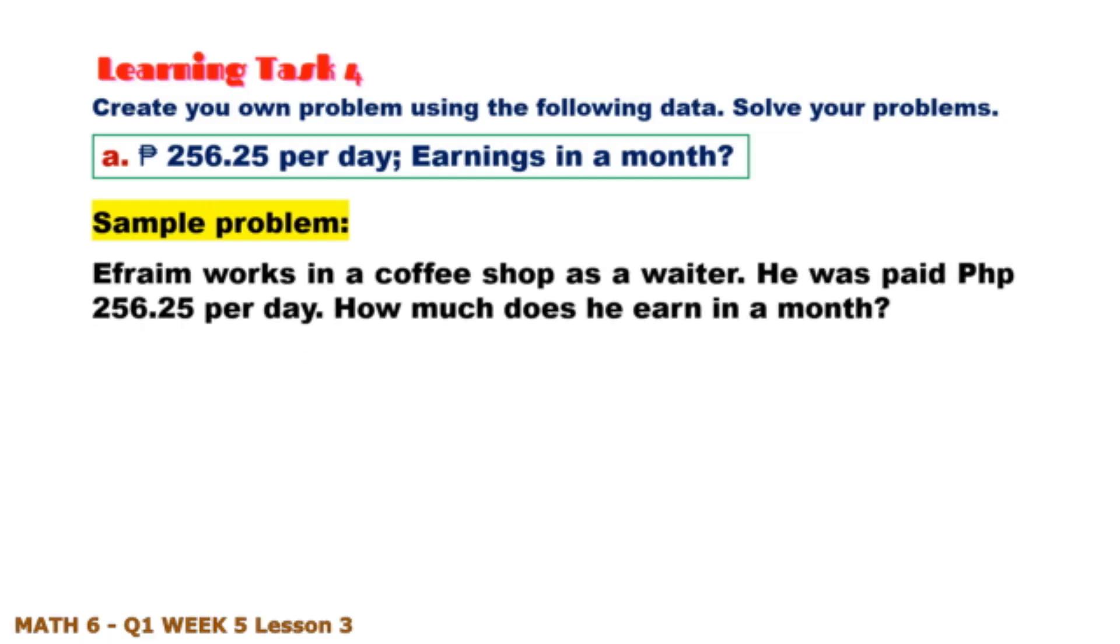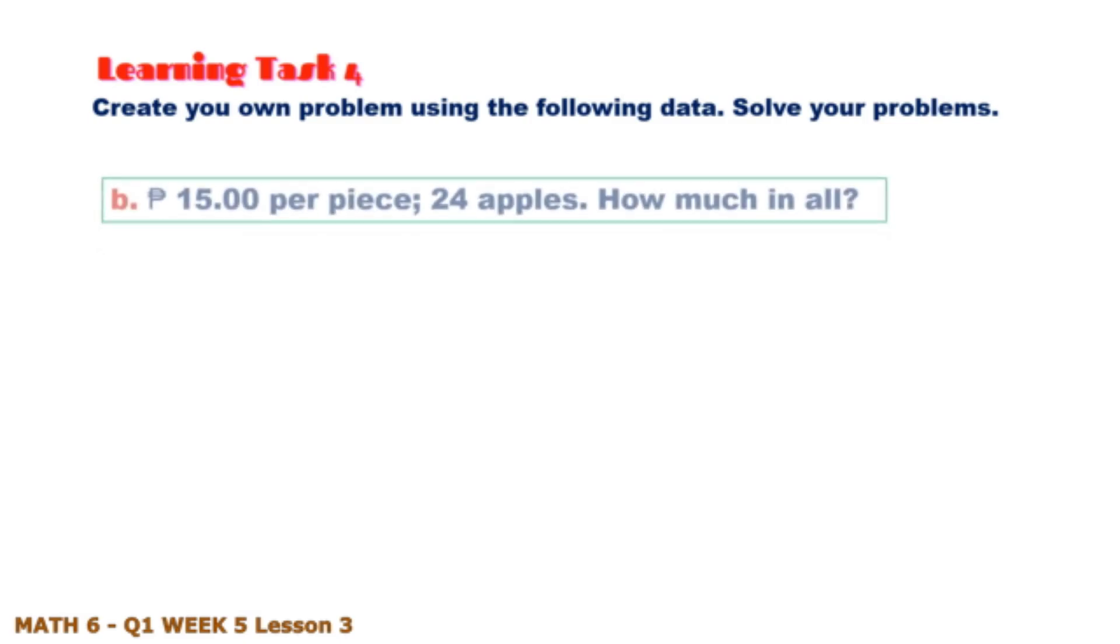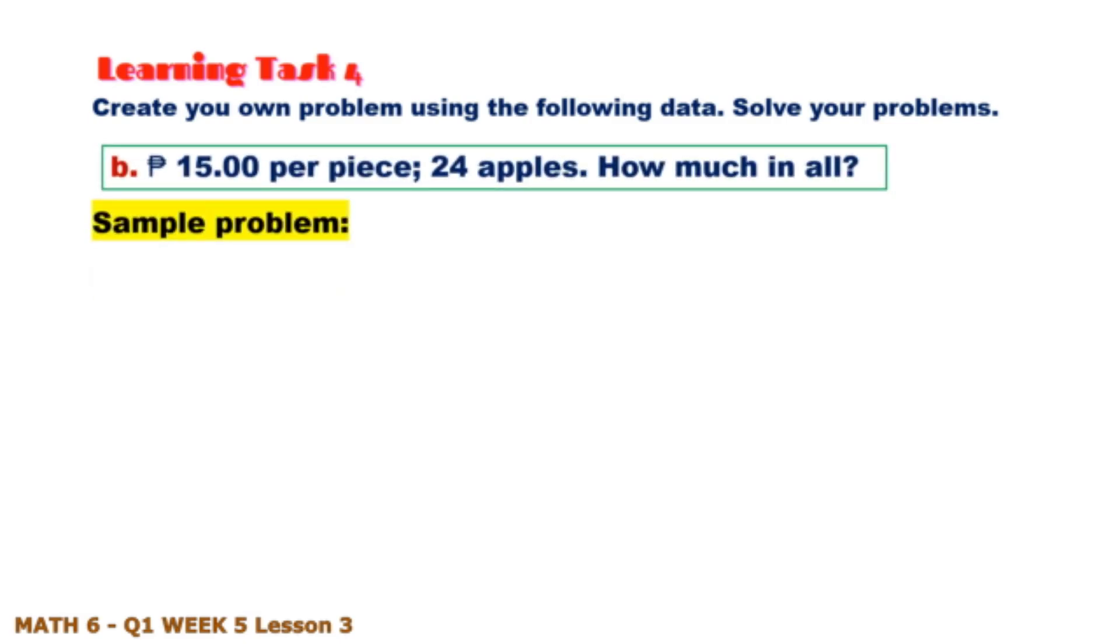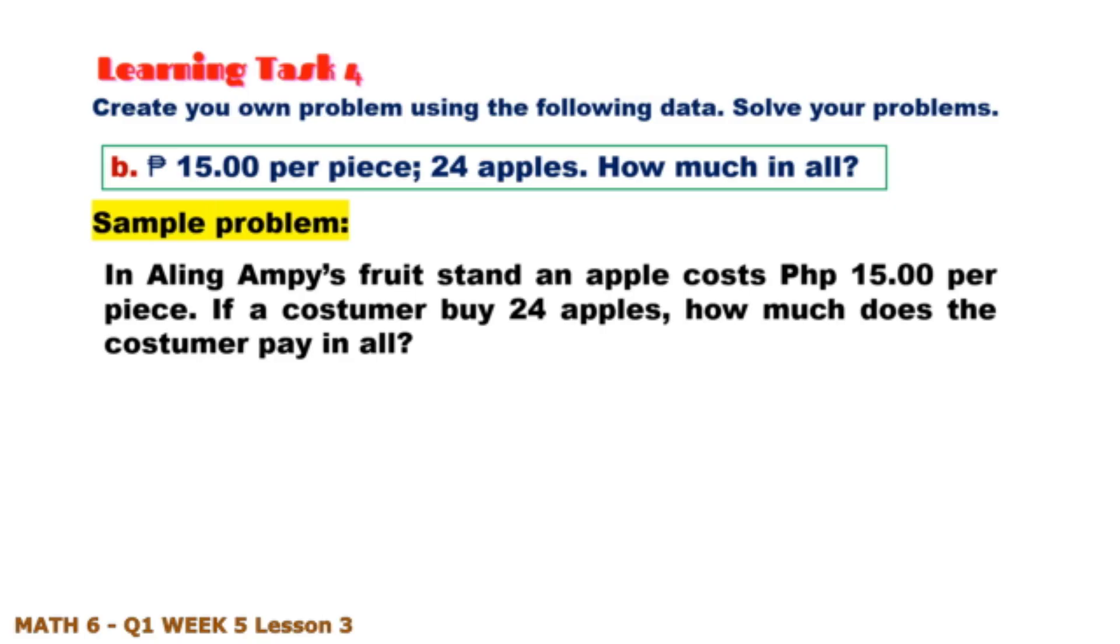Sample problem: Efraim works in a coffee shop as a waiter. He was paid 256 pesos and 25 centavos per day. How much does he earn in a month? Letter B: In Aling Amping's fruit stand, an apple costs 15 pesos per piece. If a customer buys 24 apples, how much does the customer pay in all? And the answer is 360 pesos.